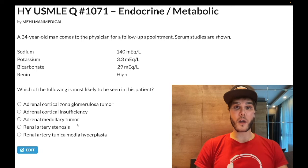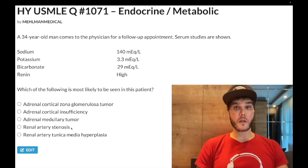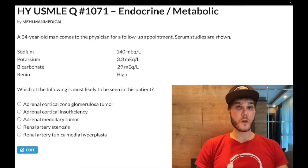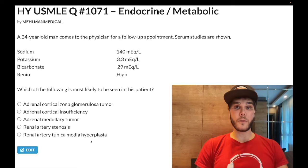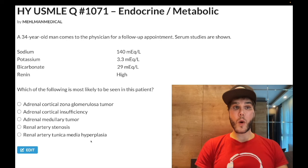Choice D: renal artery stenosis — wrong answer. When you see renal artery stenosis written generically, it refers to atherosclerosis — atherosclerotic disease of the renal artery causing narrowing. Classic patient: over age 50, with diabetes, hypertension, and smoking history. That's wrong because our correct answer is fibromuscular dysplasia. FMD is the renal artery stenosis in a woman in her 20s to 40s — nothing to do with atherosclerosis; it's tunica media hyperplasia.